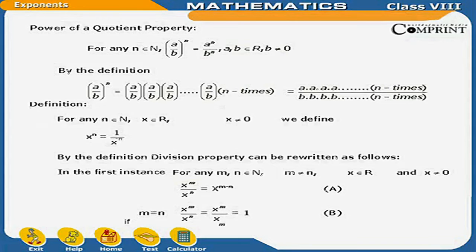Definition: For every small n belonging to capital N, X belonging to capital R, X not equal to 0, we define X raised to the power minus n as equal to 1 upon X raised to the power n. By this definition, the division property can be written as follows. For any M or N belonging to capital N, M not equal to N, X belonging to capital R, and X not equal to 0: X raised to the power n upon X raised to the power n is equal to 1.